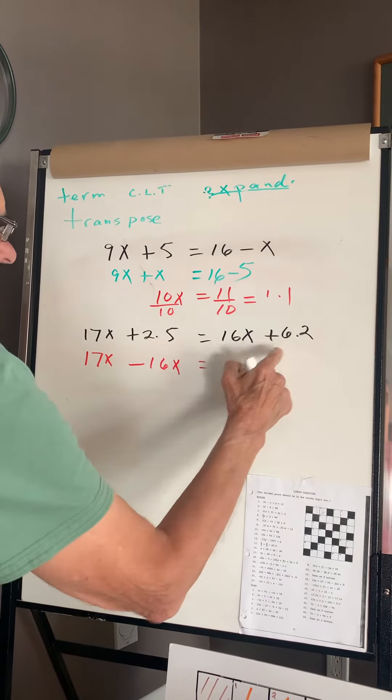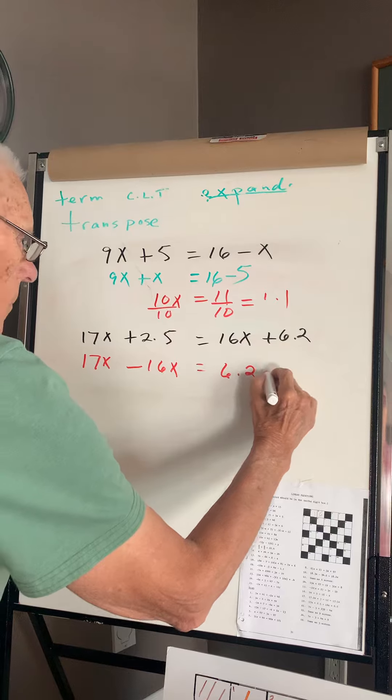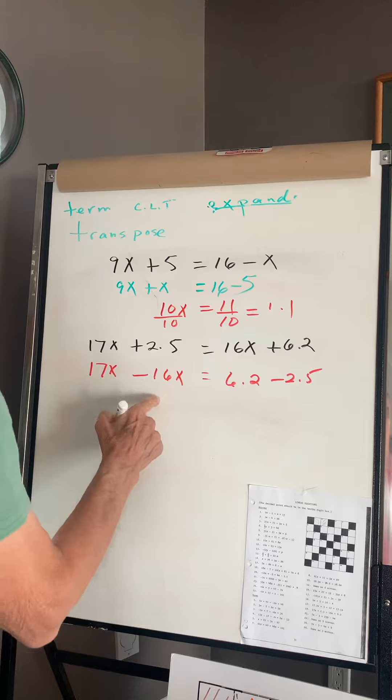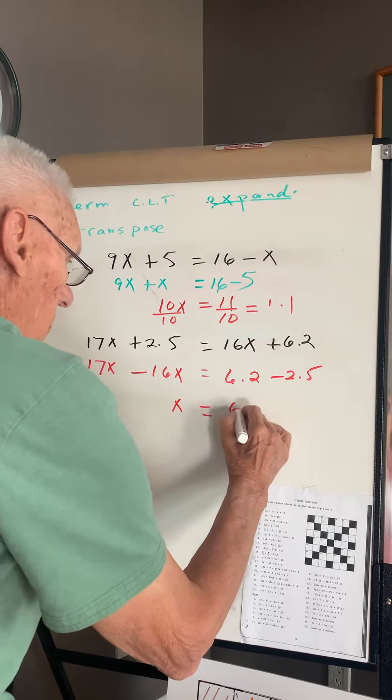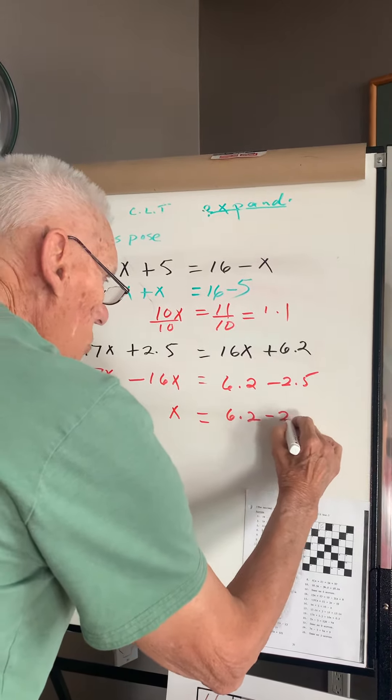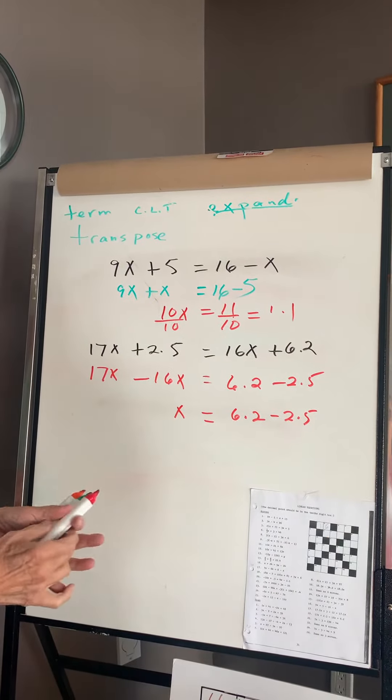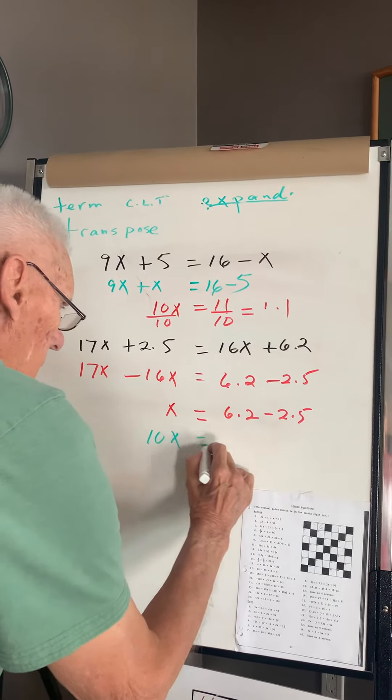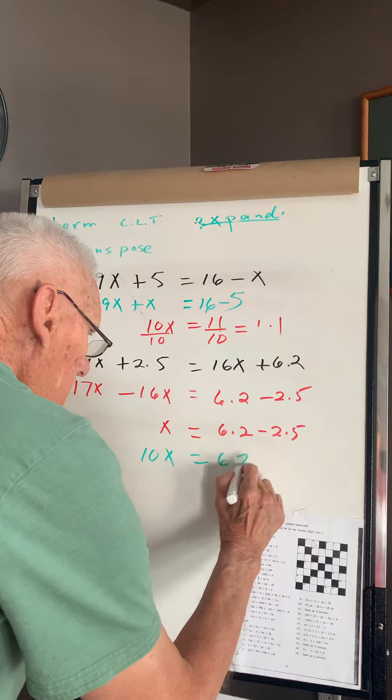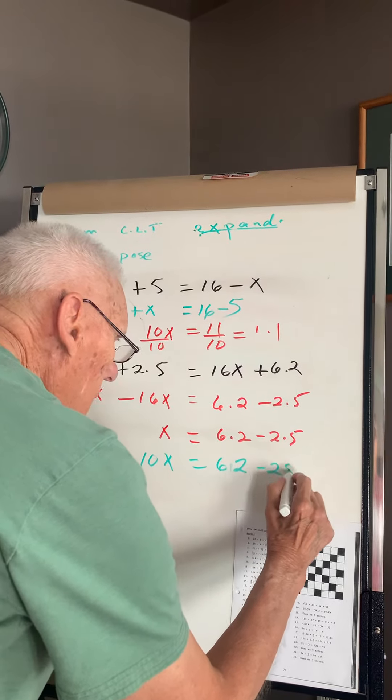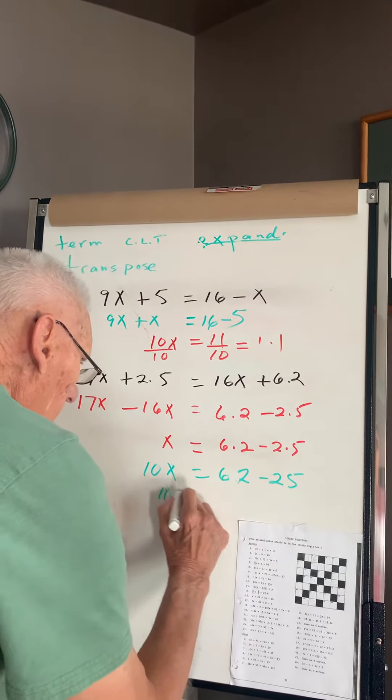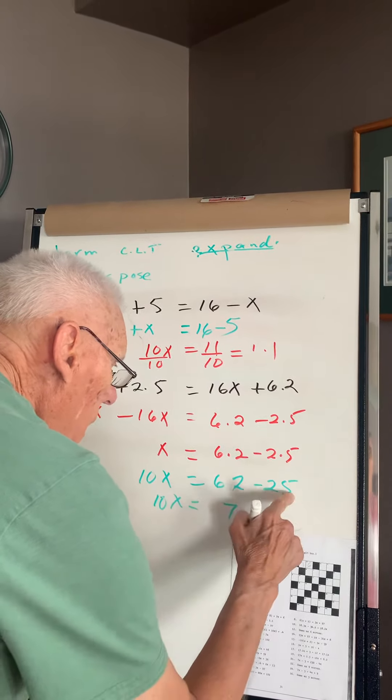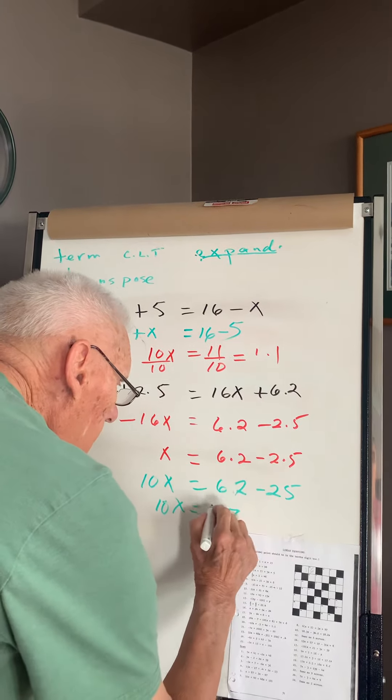Next, 17x plus 5 equals 16x plus 6.2. Transpose, 7x minus 16x equals 6.2 minus 2.5. So we have x equals 6.2 minus 2.5. I don't like those decimals, let's multiply by 10 times 10 times 10 times 10. So 10x will be, 7 and 5 is 12, 37.